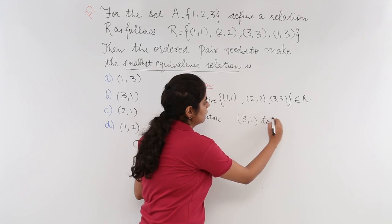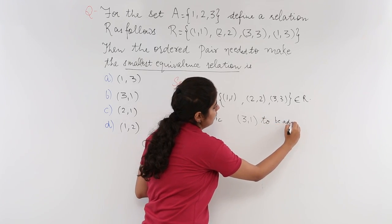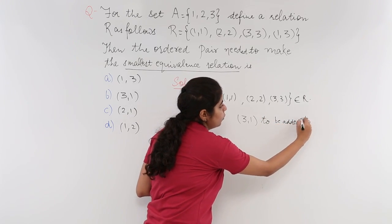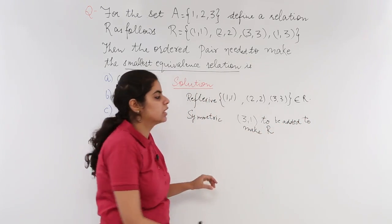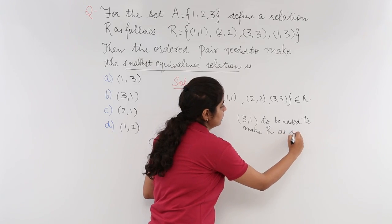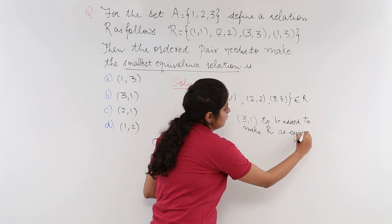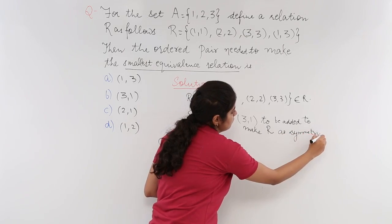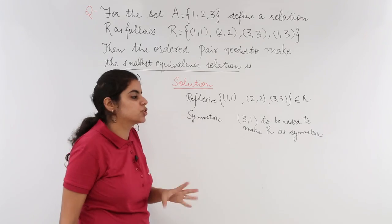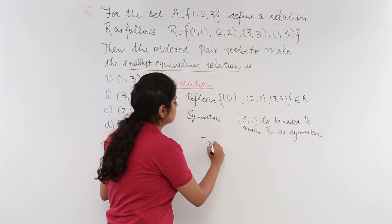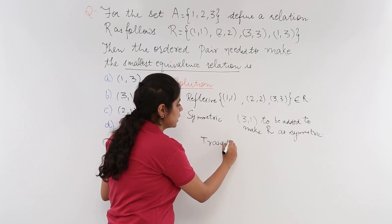So, (3,1) to be added to make R, that is the relation, as symmetric. Now, that means I have to add one relation. This I have to keep into account. What about transitive? Let's check about transitive.